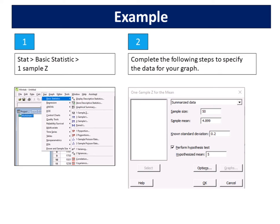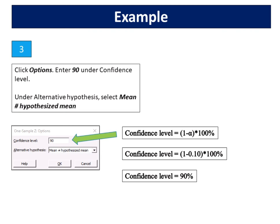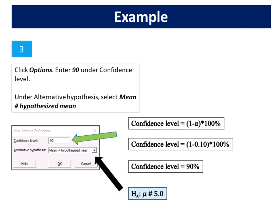Select Perform Hypothesis Test. In hypothesized mean, enter 5. Click Options. Enter 90 under Confidence Level. Confidence Level is 1 minus alpha, multiplied by 100. Under Alternative Hypothesis, select mean not equal to hypothesized mean.